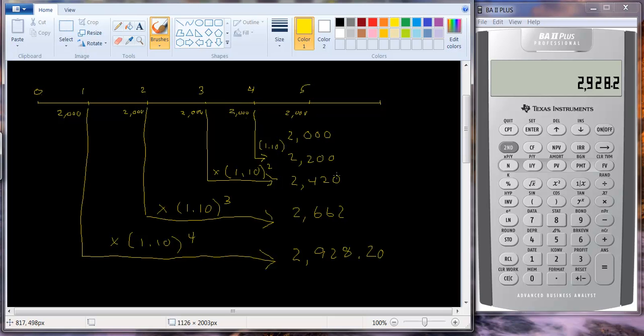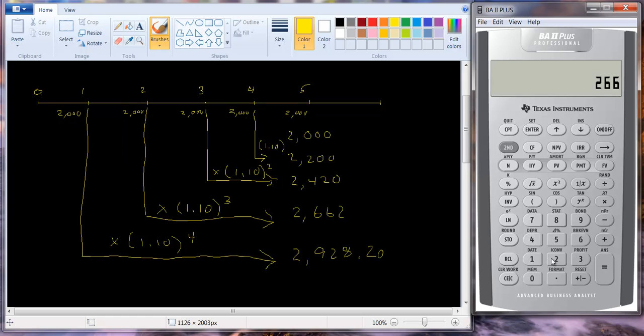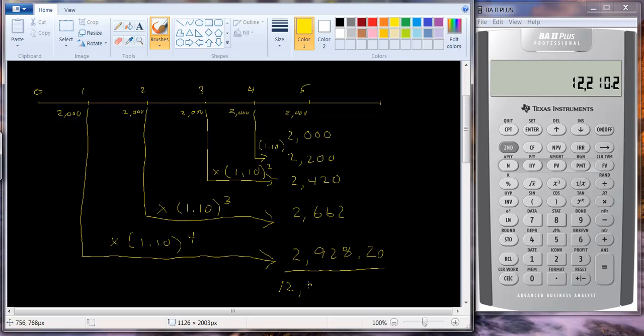And let's just add one, two, three, four, these five numbers together. So I'll just add going up: $2,662 plus $2,420 plus $2,200 plus $2,000. And we get $12,000, so after we've added all of these up, $12,210.20.